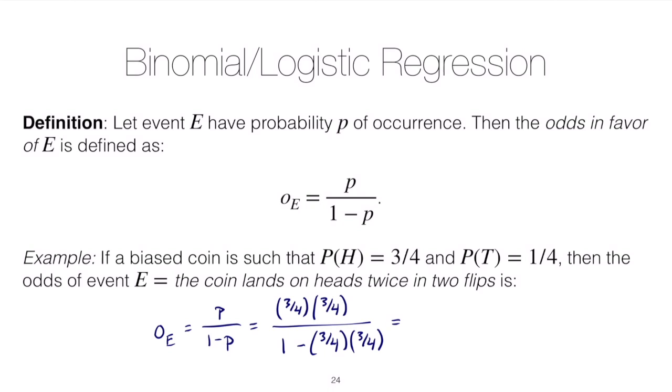We divide by 1 minus that probability above, so the product of 3/4 and 3/4. We should get in the numerator 0.5625, in the denominator 0.4375, and this gives us odds of about 1.29.